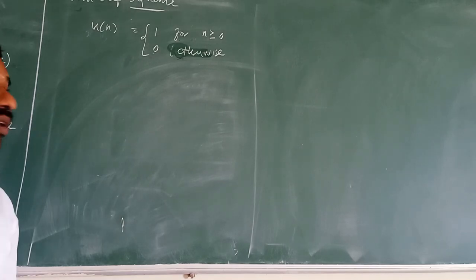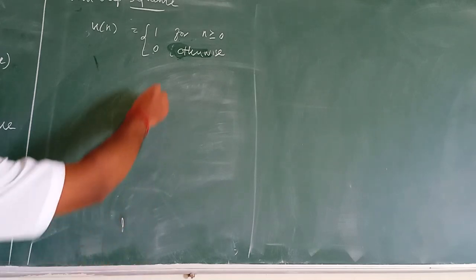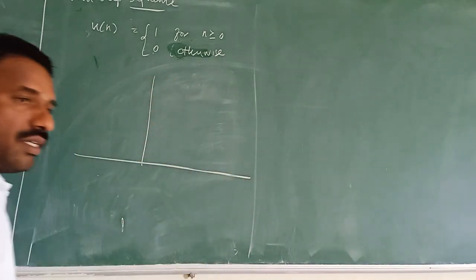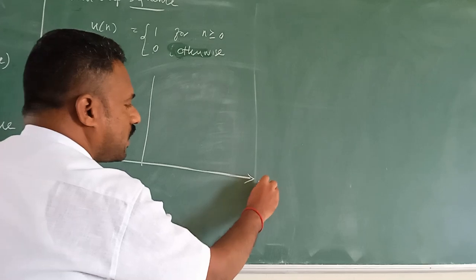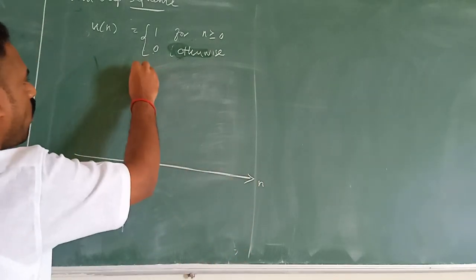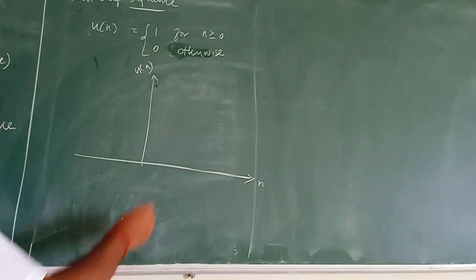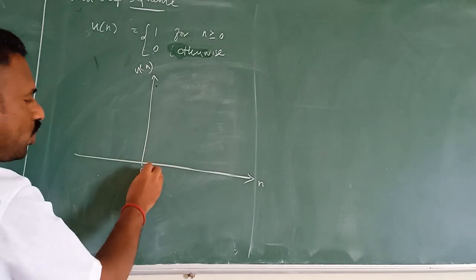How can we represent this unit step sequence in graphical representation? Consider this axis is n, this is u(n). For n values greater than or equal to zero...